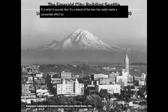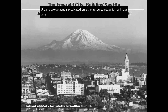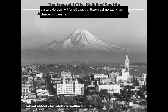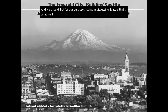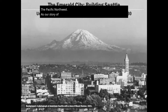Urban environmental history aims to show that urban development is predicated on resource extraction or, in our case, development for railroads — all necessary rural changes for the urban landscape. For our purposes today, discussing Seattle, that's what we'll be talking about, and we'll be keeping in line with our overarching story of settler colonialism in the Pacific Northwest.